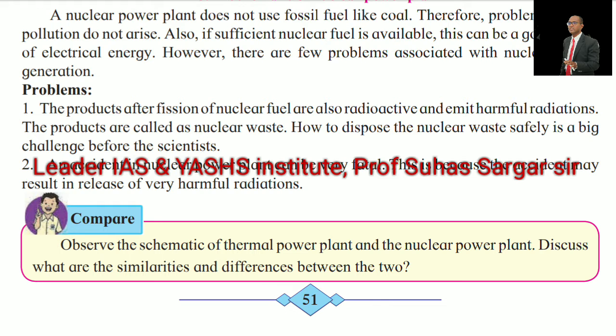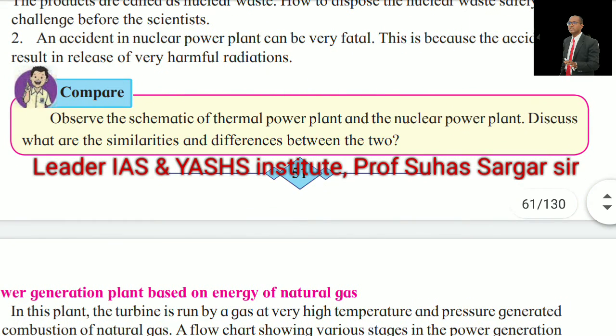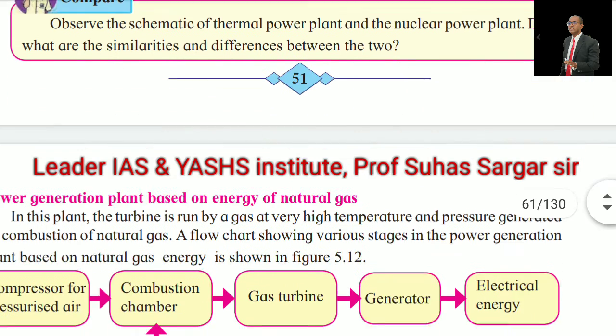However, there are a few problems associated with nuclear power stations. The products after fission of nuclear fuel are also radioactive and emit harmful radiations. These products are called nuclear waste. How to dispose of nuclear waste safely is a big challenge before scientists. An accident in a nuclear power plant can be very fatal because the accident may result in the release of very harmful radiation. Observe the schematic of the thermal power plant and the nuclear power plant and discuss the similarities and differences between the two.